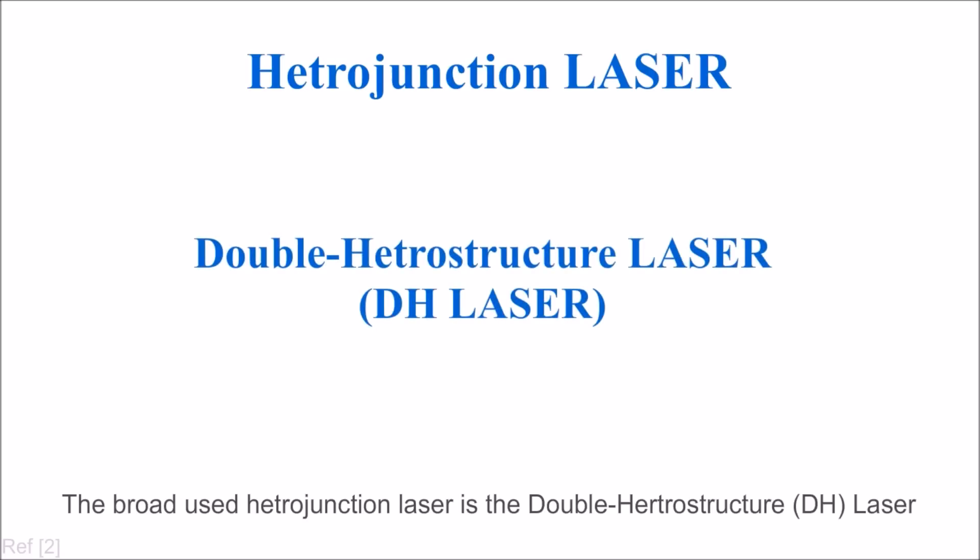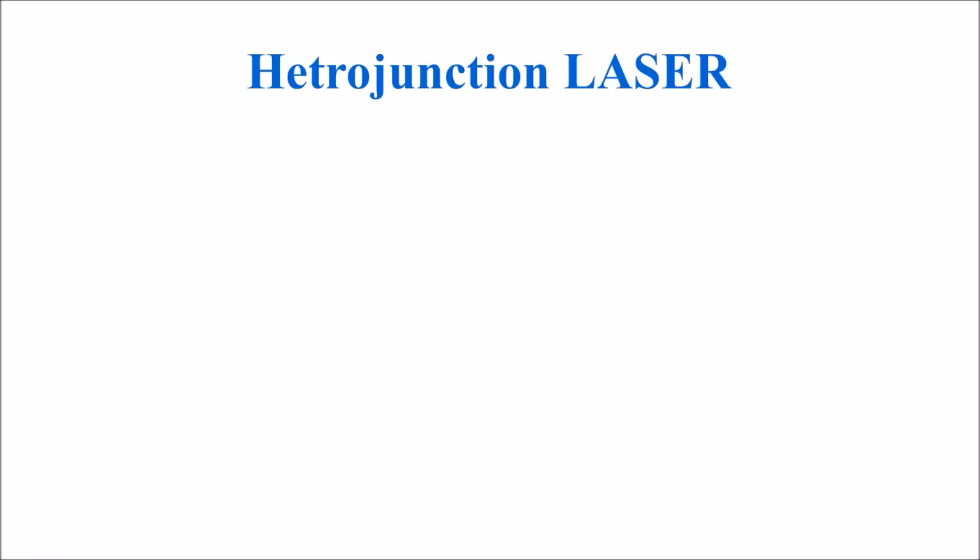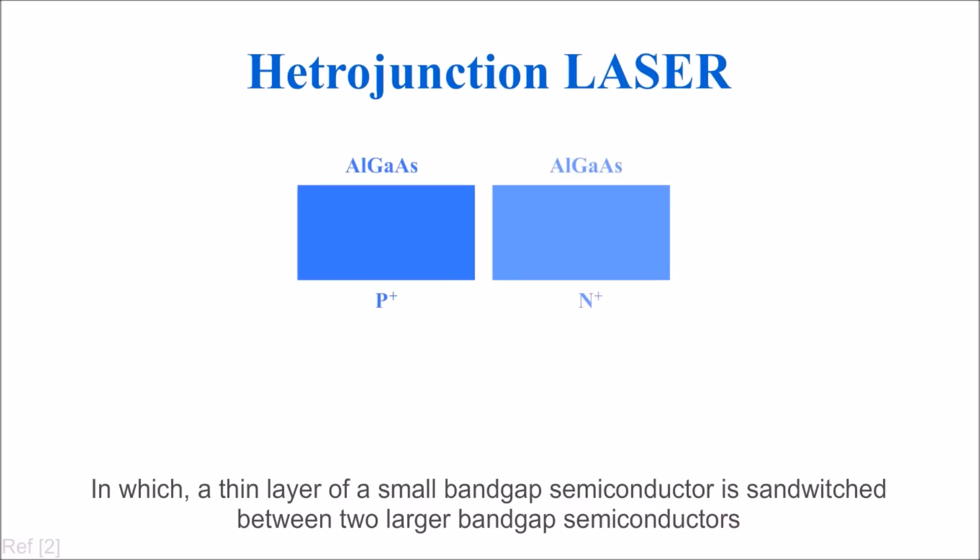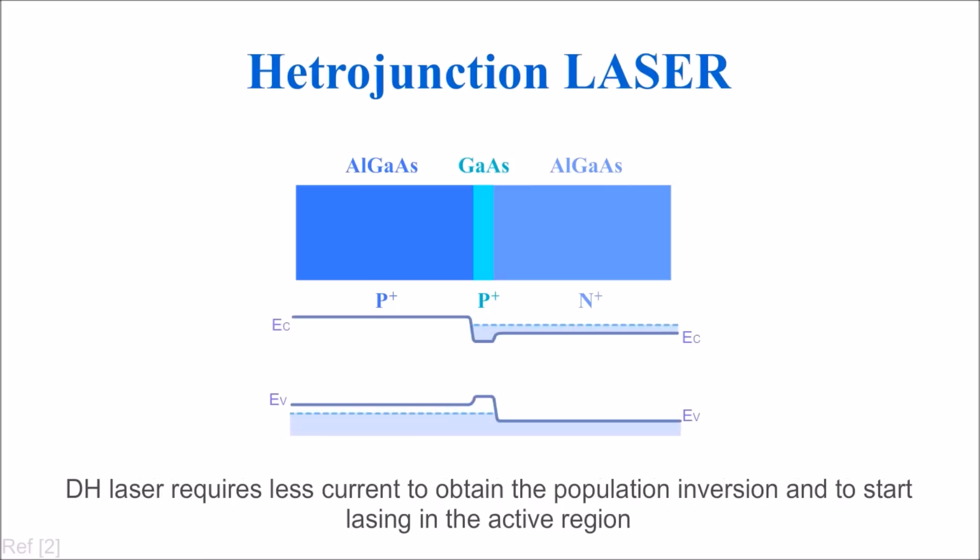The broadly used heterojunction laser is the double heterojunction, called DH laser, in which a thin layer of a small bandgap semiconductor is sandwiched between two larger bandgap semiconductors. The DH laser requires less current to obtain population inversion and to start lasing in the active region.